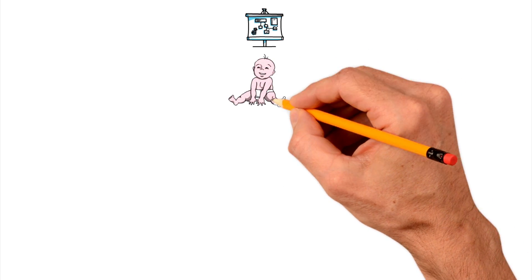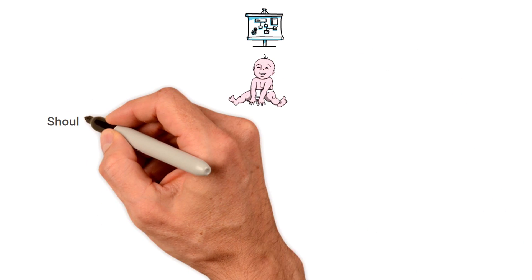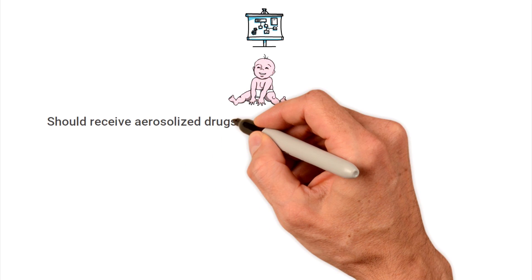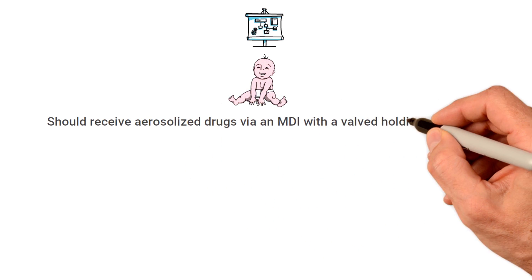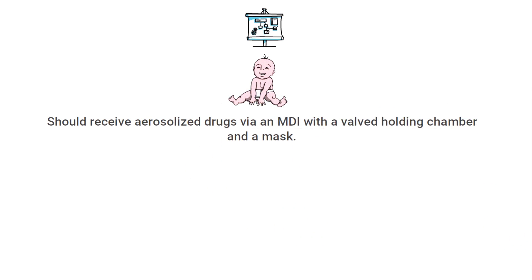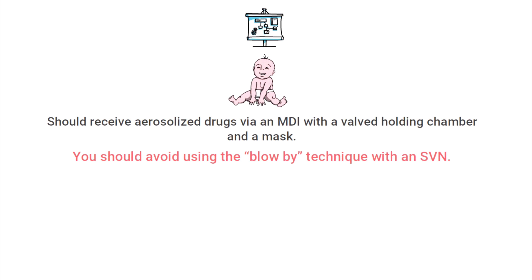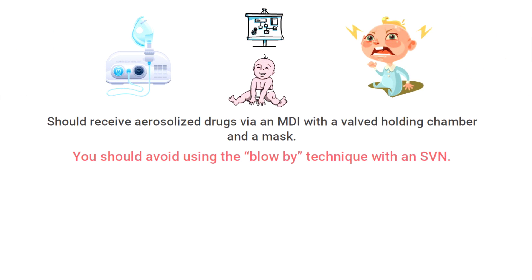In general, most infants and small children should receive aerosolized drugs with an MDI with a valved holding chamber and a mask. This is usually a more effective delivery method compared to a small volume nebulizer. You should avoid using the blow-by technique with an SVN tube because much of the medication is wasted with this delivery method. An SVN with a mask could be considered, but oftentimes small children will not tolerate the mask very well.